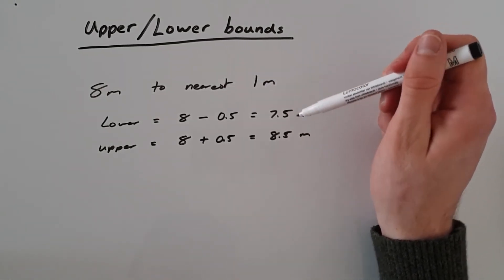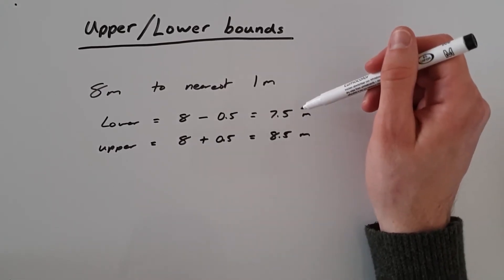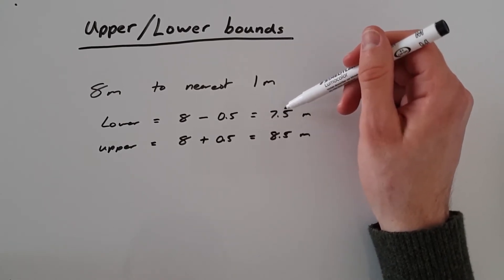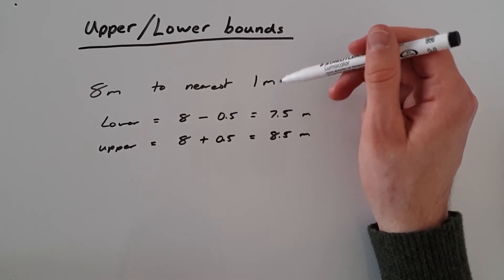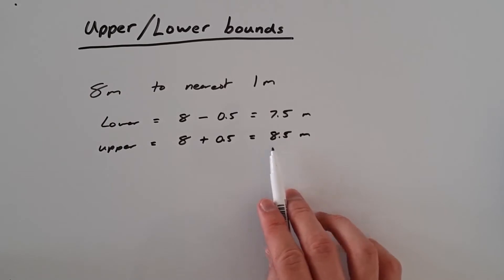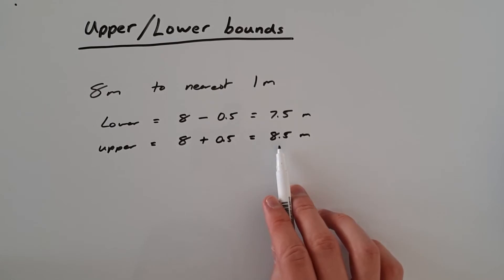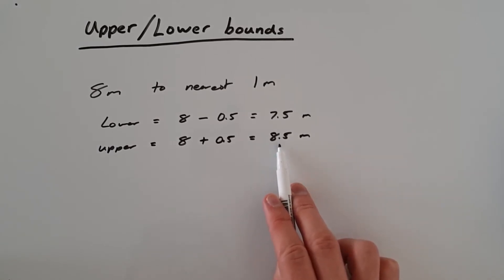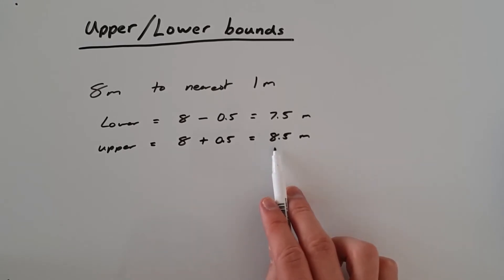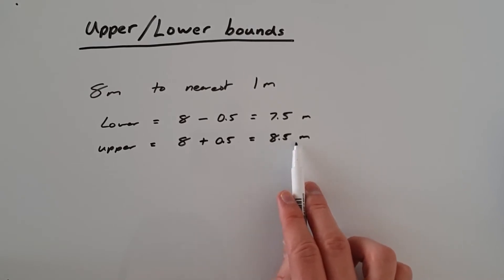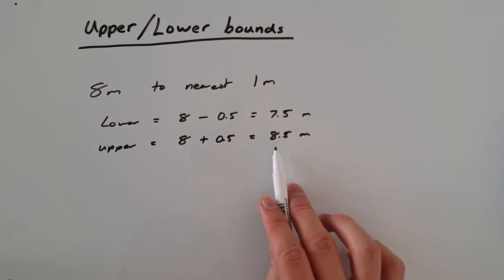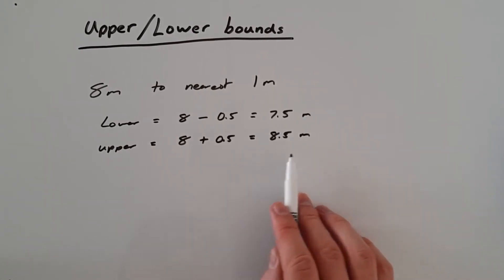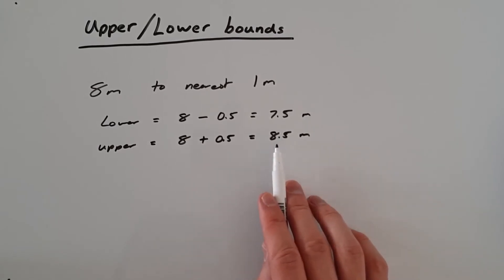A quick way to check this is to round them back the other way. Starting at the lower bound: 7.5 rounded to the nearest whole number rounds up to eight meters. Things don't quite work out the same for the upper bound — 8.5 rounded to the nearest meter rounds up to nine. However, any number below 8.5, no matter how small, would round down to eight. For example, 8.4999 recurring would round down to eight. Because 8.4999 recurring is so close to 8.5, when stating upper and lower bounds we state 8.5 as our upper bound.